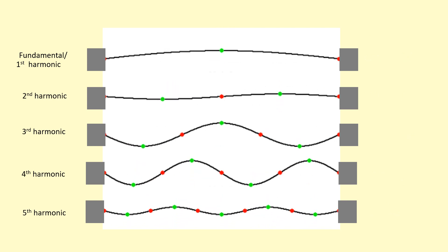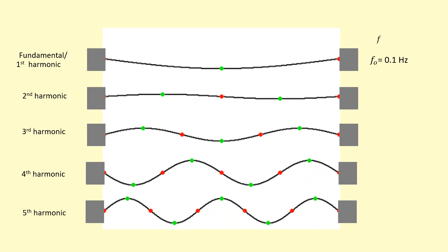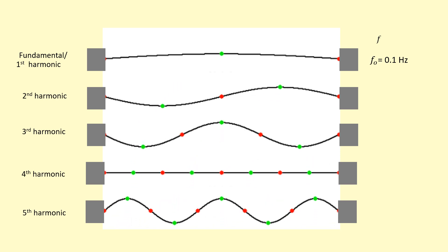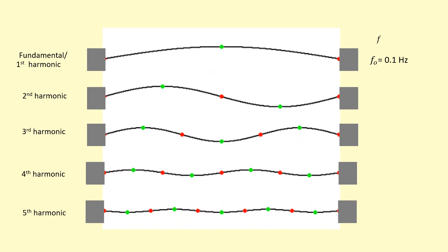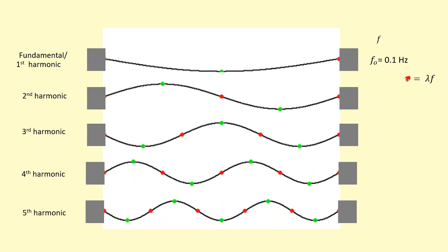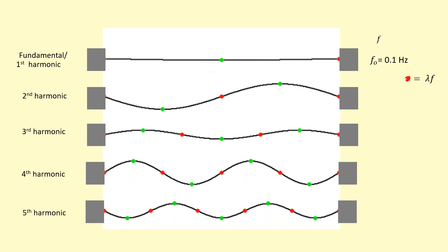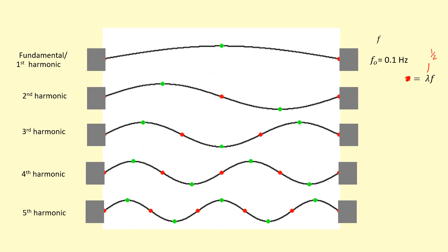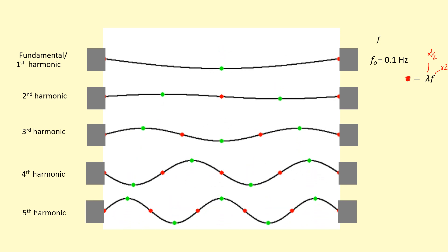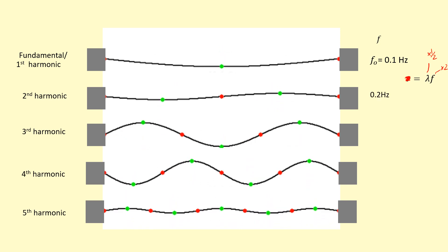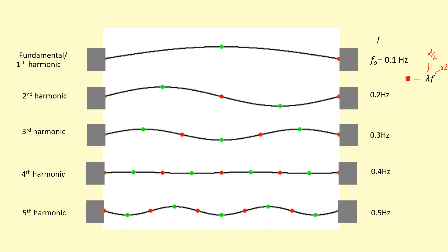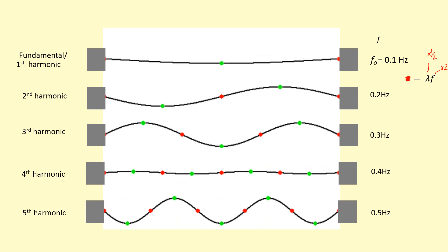What about the frequency? Let's say the first harmonic, the fundamental, has a frequency of 0.1 hertz. The second harmonic actually has double the frequency. To figure that out, we use the wave equation: the speed is going to be a constant. The wavelength of the second harmonic is half the wavelength of the first harmonic, so the frequency needs to be times two. So the second harmonic has 0.2 hertz. And then it's just going to be multiples of the frequency of the fundamental, the first harmonic.